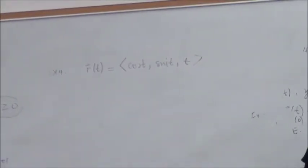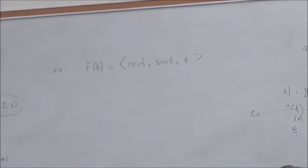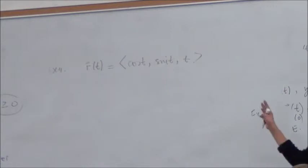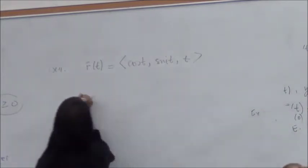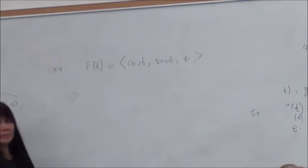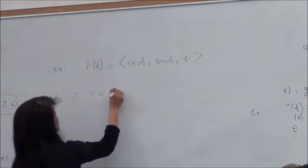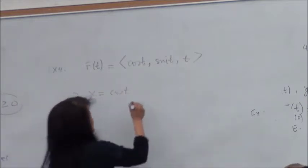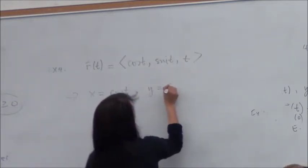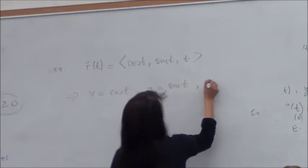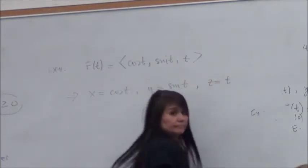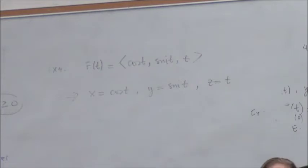Next example I want to explain because it has a lot of practical applications, and it's kind of cool. A variation of example 4: I have R(t) is cos t, sin t, and t. Just to show you, you can write it without the i, j, k. What parametric equations can you read from this? X equals cos t, right? Y equals sin t, and Z equals t.